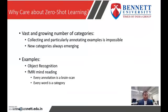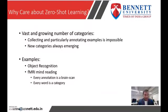Why do we care about zero-shot learning? The first reason is the vast and growing number of categories, making it difficult to collect and annotate examples. The second reason is that new categories always emerge, making it very difficult to collect labelled training examples. Some examples include object recognition and MRI mind readings, where every annotation is at a brain scale and every word is a category.